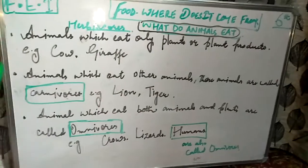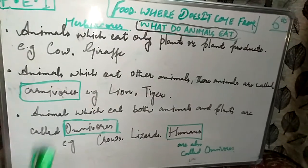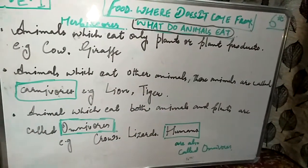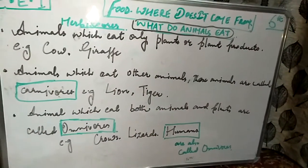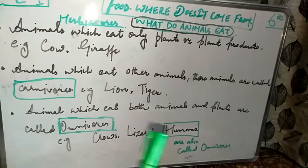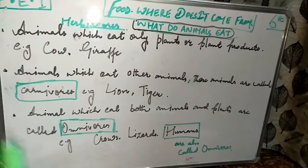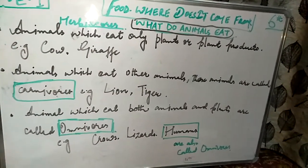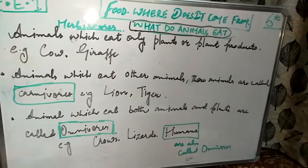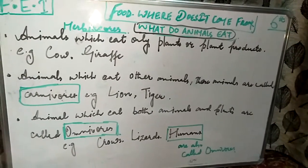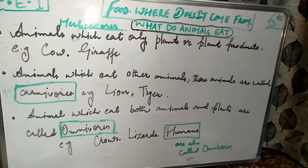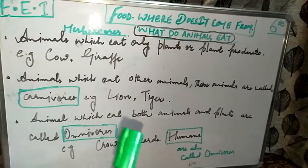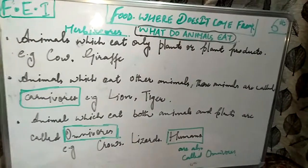Now, animals which eat other animals — these animals are called carnivores. What are animals which eat other animals called? Carnivores. For example, lion and tiger are carnivores.